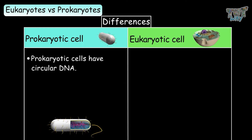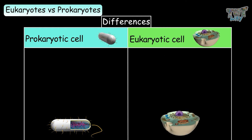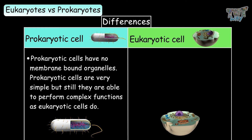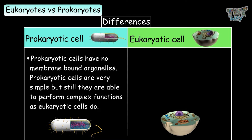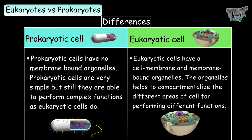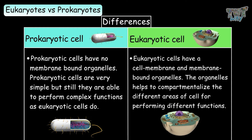Prokaryotic cells have circular DNA, whereas eukaryotic cells have linear DNA. Prokaryotic cells have no membrane-bound organelles and are very simple, but they are still able to perform the complex functions that eukaryotic cells do. Eukaryotic cells have membrane-bound organelles that help to compartmentalize different areas of the cell for performing different functions, making eukaryotic cells far more complex than prokaryotic cells.